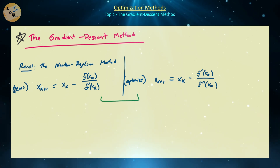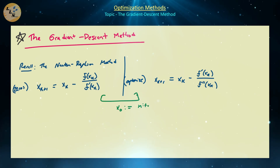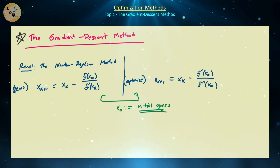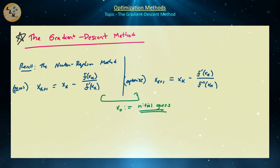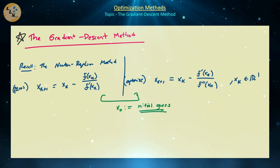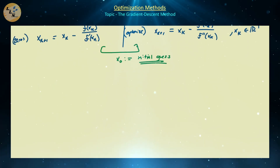In both of these schemes, x_0 is defined to be our initial guess. As long as your initial guess is not too far from the optimum value, this iteration should converge really rapidly. For both of these methods, x_k belongs to a one-dimensional vector space. Now the gradient descent method actually has a very similar structure.